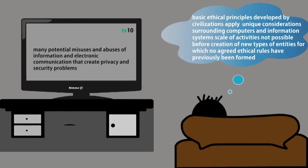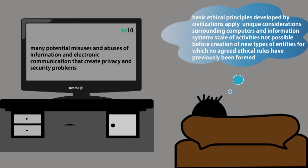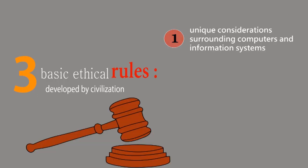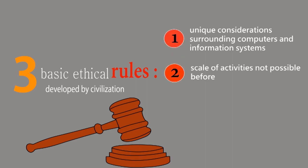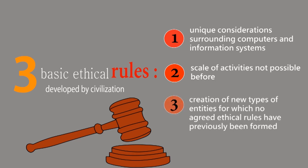Many potential misuses and abuses of information and electronic communication create privacy and security problems. Three basic rules developed by civilization address this. Firstly, unique considerations surrounding computers and information systems. Secondly, the scale of activities not possible before. And lastly, the creation of new types of entities for which no agreed ethical rules have previously been formed.